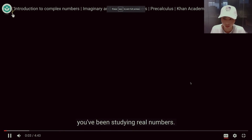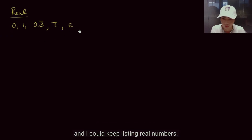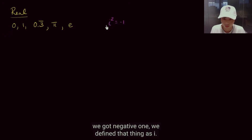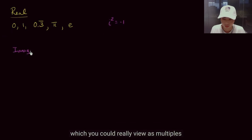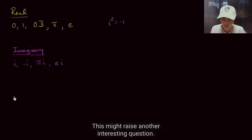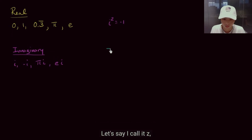Most of your mathematical lives you've been studying real numbers — things like 0, 1, 0.3 repeating, pi, and e. Then we explored the notion of: what if there was a number that, if I squared it, I'd get negative 1? We defined that as i, creating a whole new class of numbers — imaginary numbers, which you could view as multiples of the imaginary unit: i, negative i, pi times i, e times i. This raises another interesting question: what if I combined imaginary and real numbers?